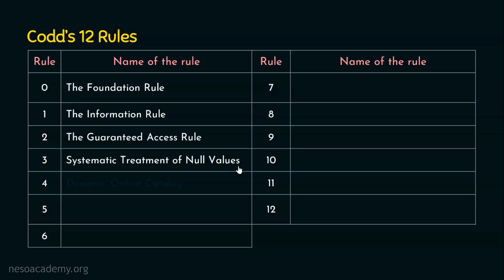Coming to rule number 4, which is the dynamic online catalog. The database description is also represented at the logical level. This rule deals with database description and authorization — which users can access what kind of data.